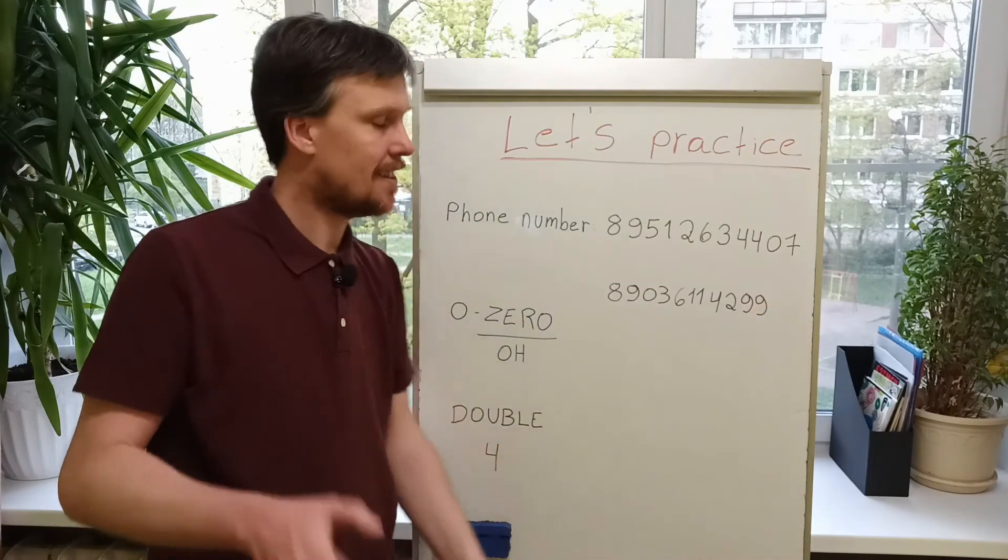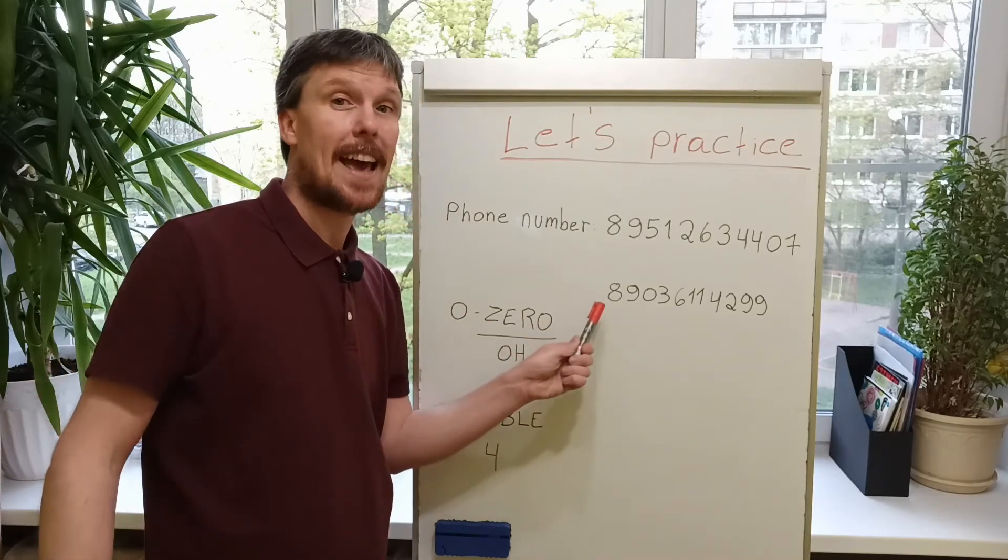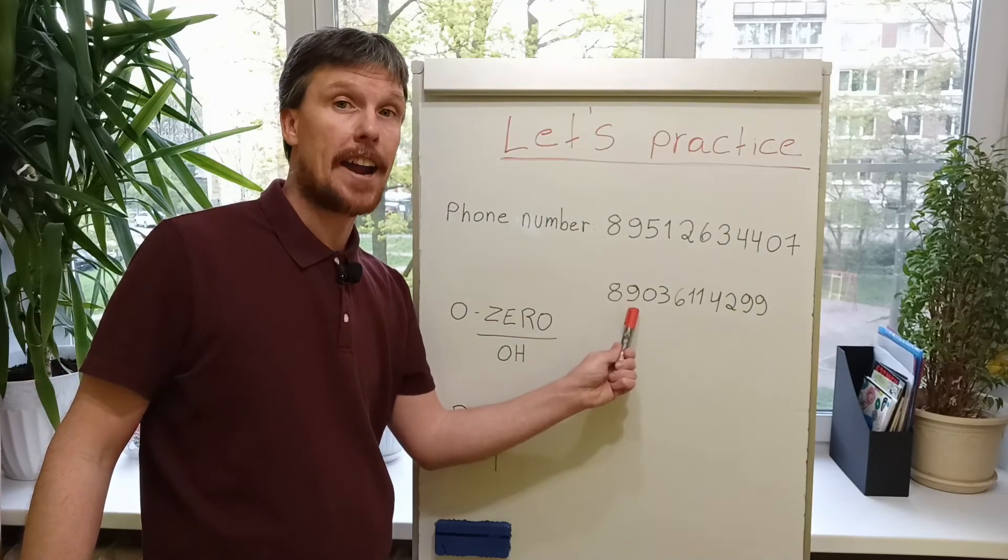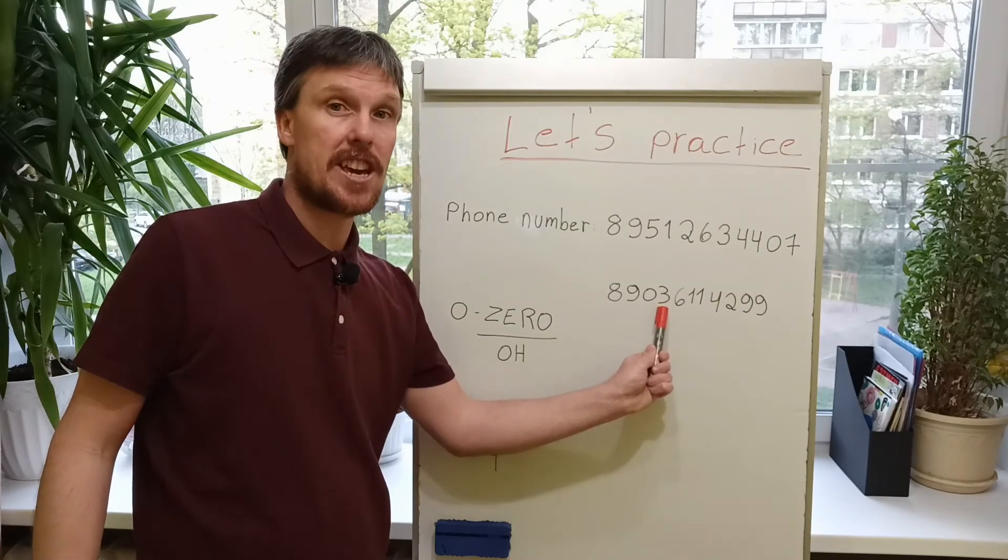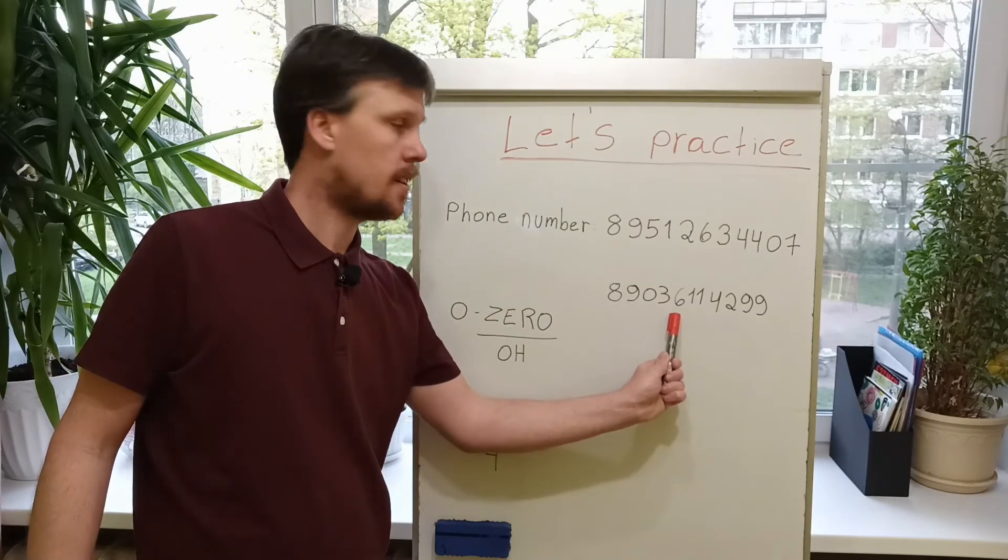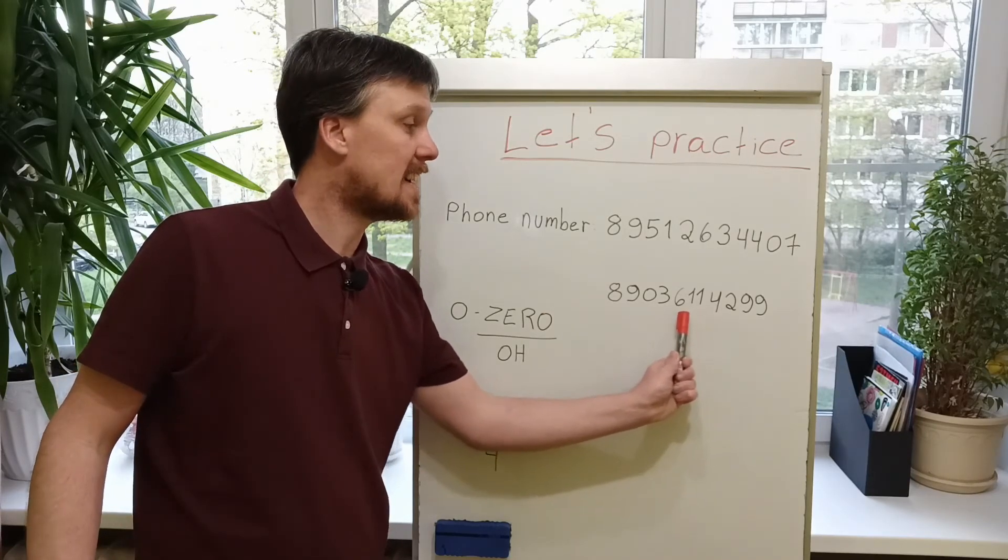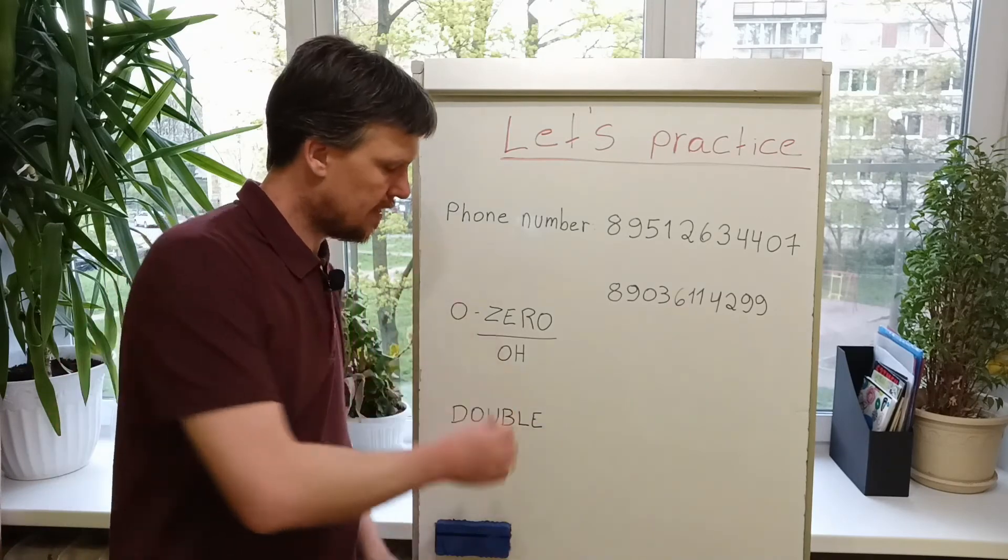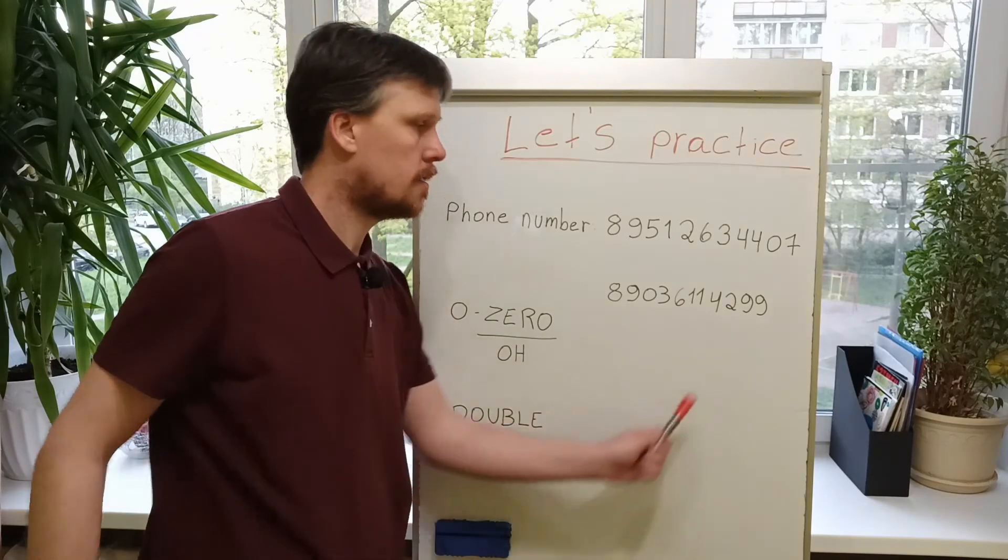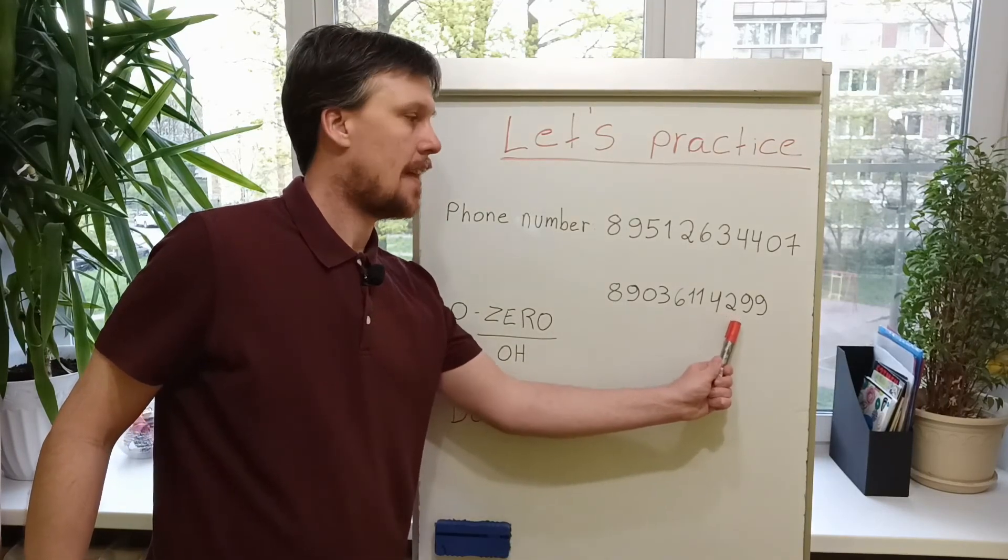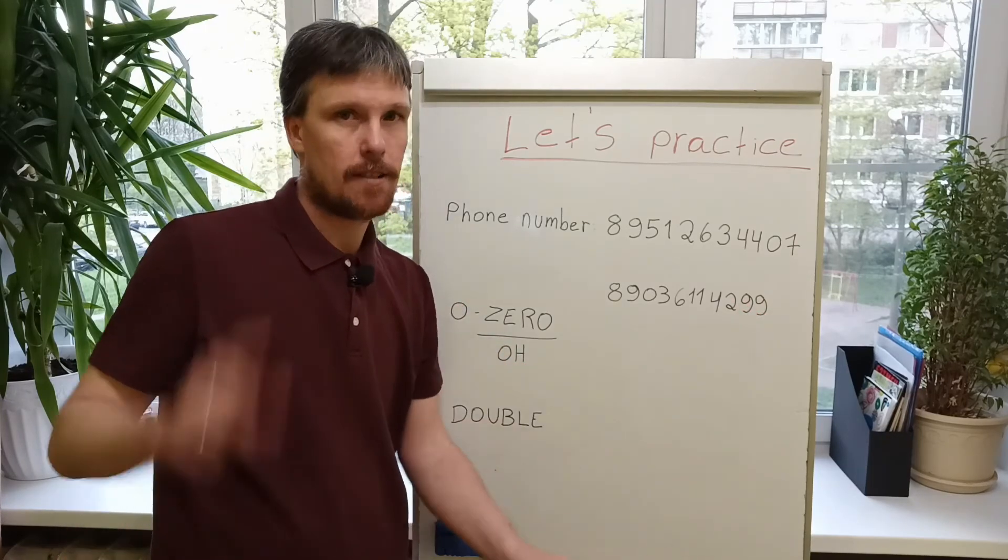Excellent! Another phone number. My friend's phone number. Repeat. Eight. Nine. Nine. O. Or zero. Three. Six. One. One. One. Or double one. Double one. Four. Two. Nine. Nine. Or double nine.